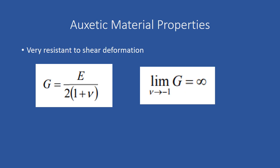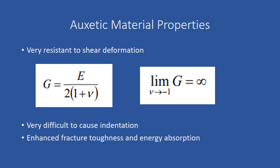As the ratio v becomes negative and approaches negative one, the shear modulus G approaches infinity. It is also extremely difficult to cause indentation to NPR materials as this is a result of shear deformation. Enhanced fracture toughness and energy absorption are a few more benefits.